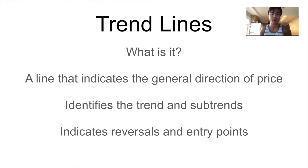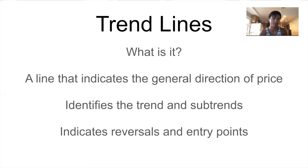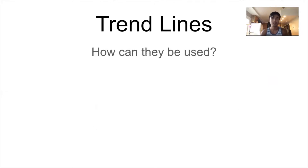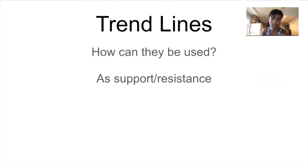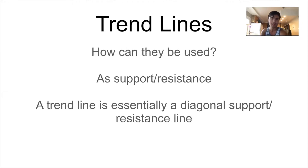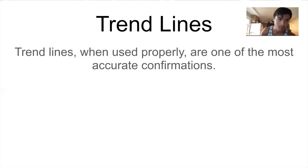We look for a break and we look for a retest. I'm mostly going to go over how to draw a trend line, because if you can draw it properly then you can use it properly, but if you can't draw it properly then you can't use it at all. Trend lines can be used as support and resistance — they're essentially diagonal support and resistance lines.